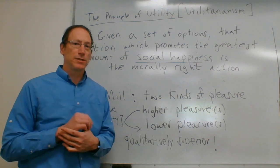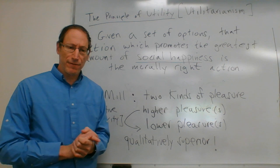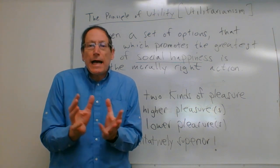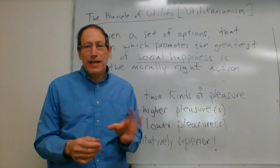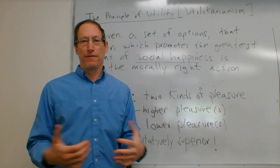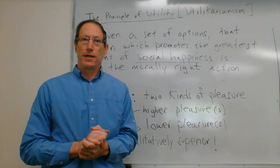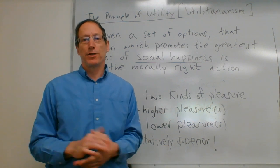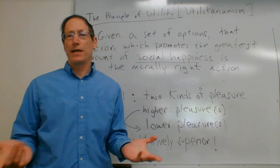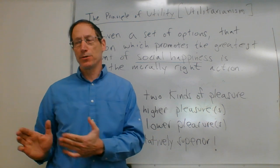Pleasures can come in degrees. For example, a small glass of chocolate milkshake gives a certain amount of pleasure, while a huge cup gives more. The pleasure from the big cup is quantitatively more than the small cup. Similarly, if I prefer chocolate milkshake to strawberry milkshake, I get more pleasure from the chocolate — but Mill would say that's still a quantitative difference, the same kind of pleasure.